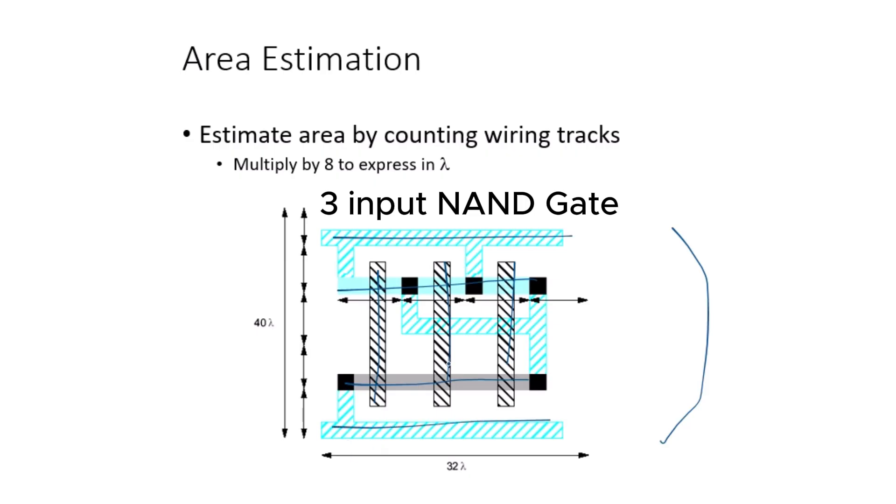Let me tell you how you estimate the area. You just count the wiring tracks, horizontal wiring tracks and vertical wiring tracks. Let's first count horizontal wiring tracks. As you can see, VDD makes up one wiring track. This PMOS makes up second wiring track. This connection to the output makes up third wiring track. This NMOS makes up fourth wiring track, and this ground makes up fifth wiring track. So there are a total of five wiring tracks here. Five times 8 lambda counts up to 40 lambda, so its height is 40 lambda.